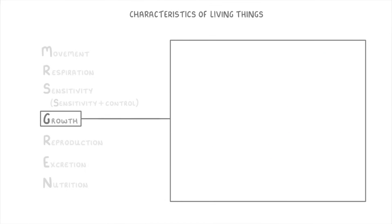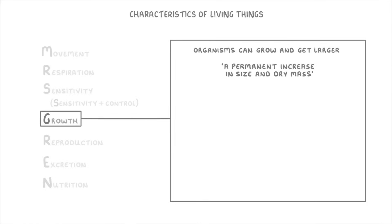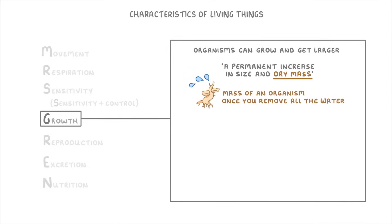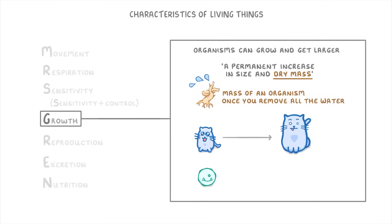Next we have Growth, which is also fairly self-explanatory — it just means that organisms can grow and get larger. In technical terms, we describe it as a permanent increase in size and dry mass, with dry mass meaning the mass of an organism once you remove all the water. For a cat, growth could mean going from a kitten to an adult cat, or for bacteria, which is just a single cell, it means going from a smaller cell to a larger cell.